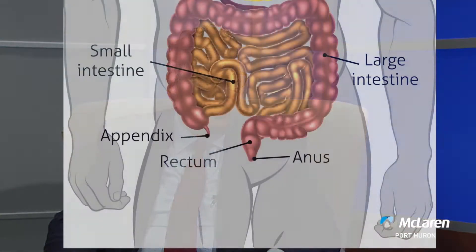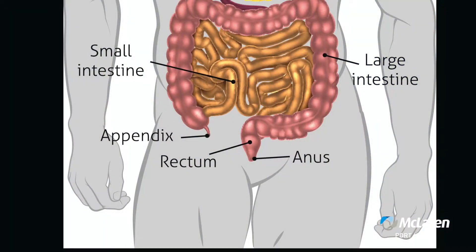Appendicitis is simply inflammation of the appendix. The appendix is a little finger-like structure on the right colon, on the right side of your abdomen, low towards the pelvis, and it's an organ that has some immune functions. So it's located at the very beginning of the colon on the right side and it has some immune functions in our gut.